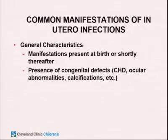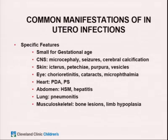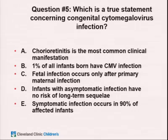Moving to in utero infections: manifestations are usually present right at birth and are usually congenital defects, making it clear the infection was not acquired at delivery. General features common to any congenital infection include SGA, microcephaly, calcifications, skin findings, chorioretinitis, cardiac lesions, hepatosplenomegaly, and bony lesions — all very nonspecific. Therefore, you need to know the specific distinguishing features of each infection for the boards.